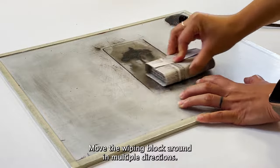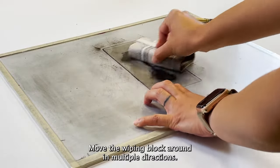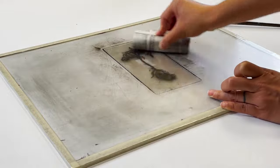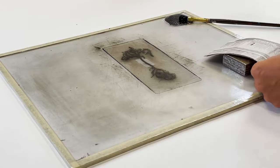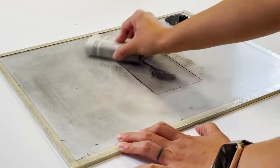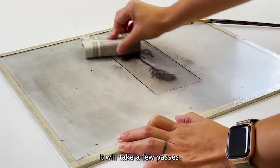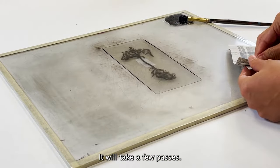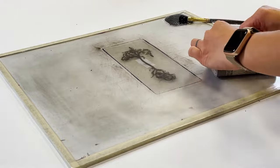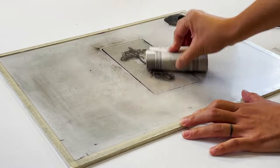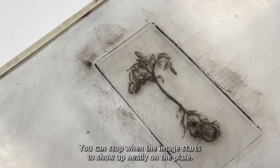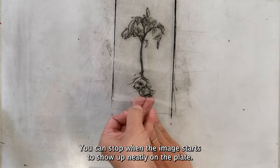Move the wiping block around in multiple directions. It'll take a few passes. You can stop when the image starts to show up neatly on the plate.